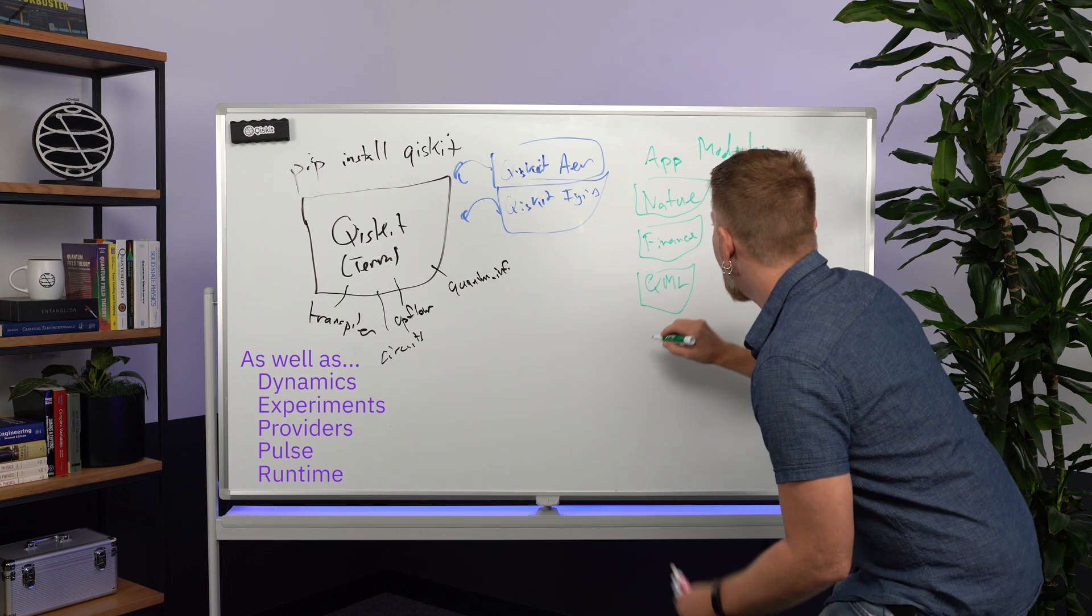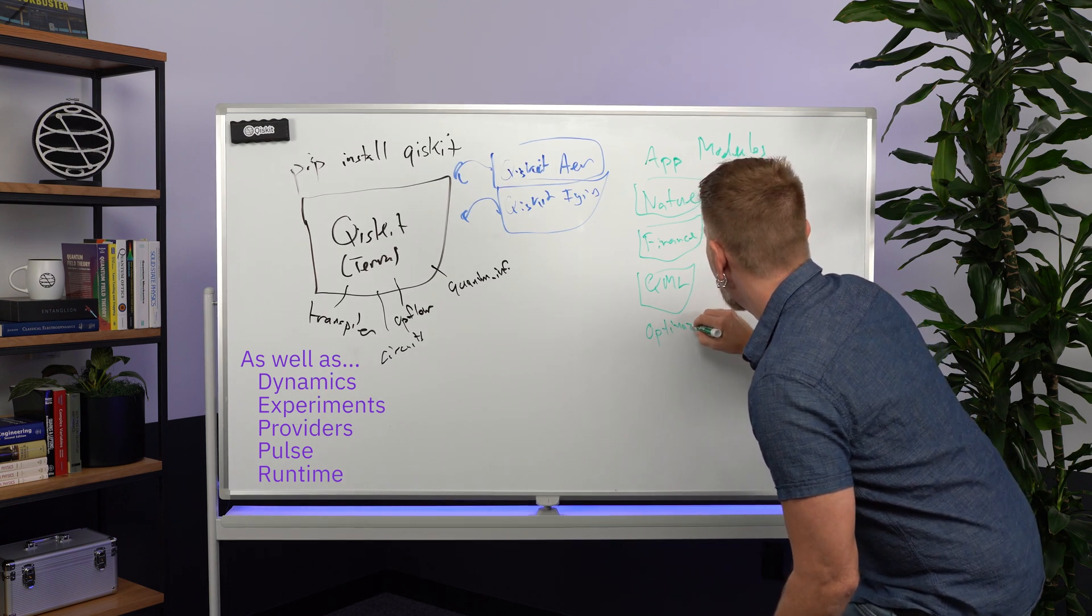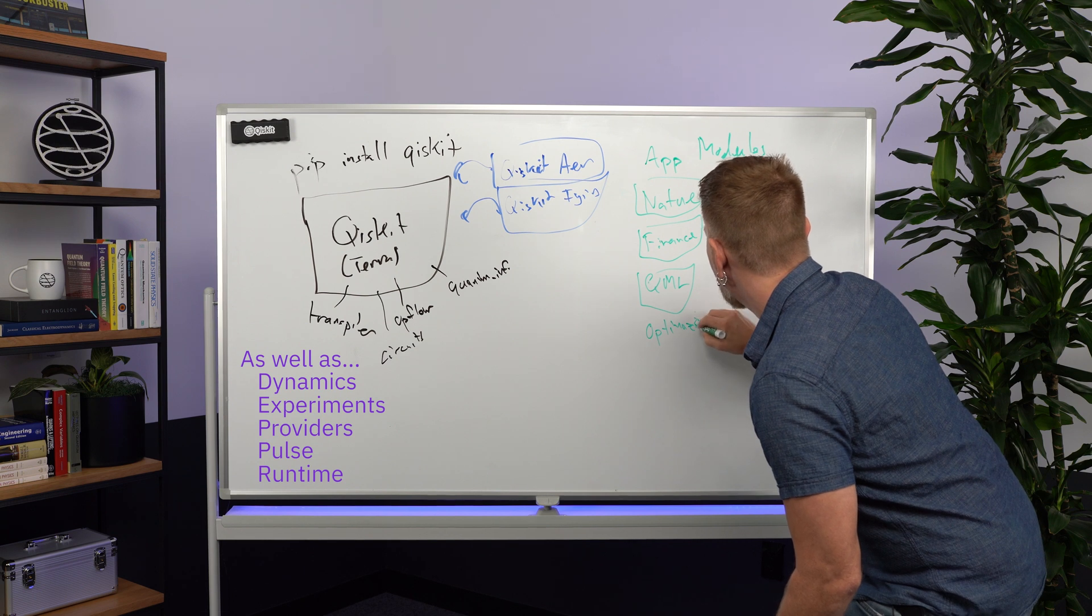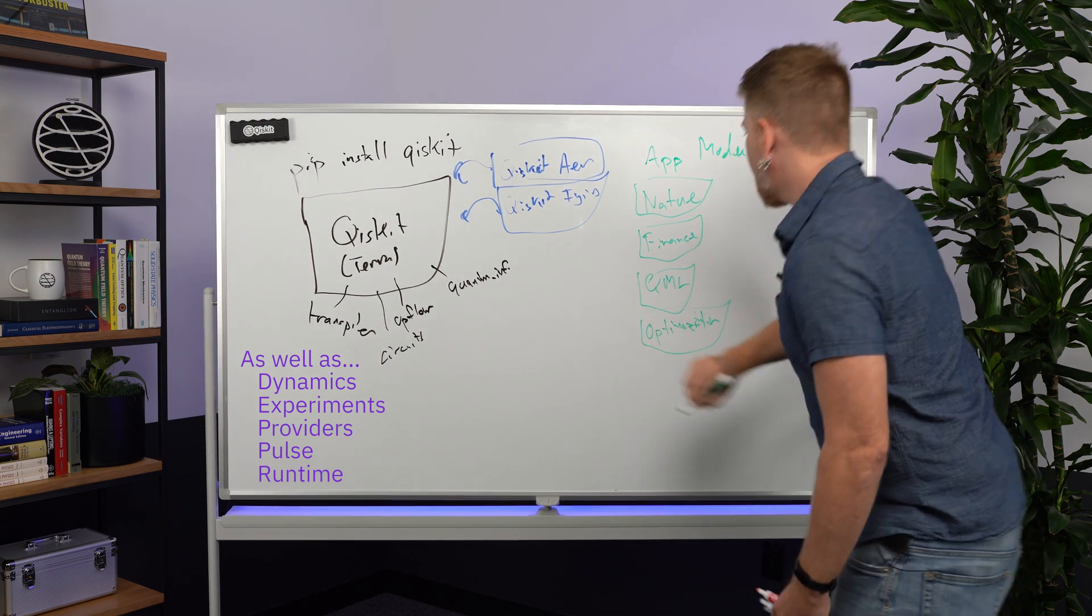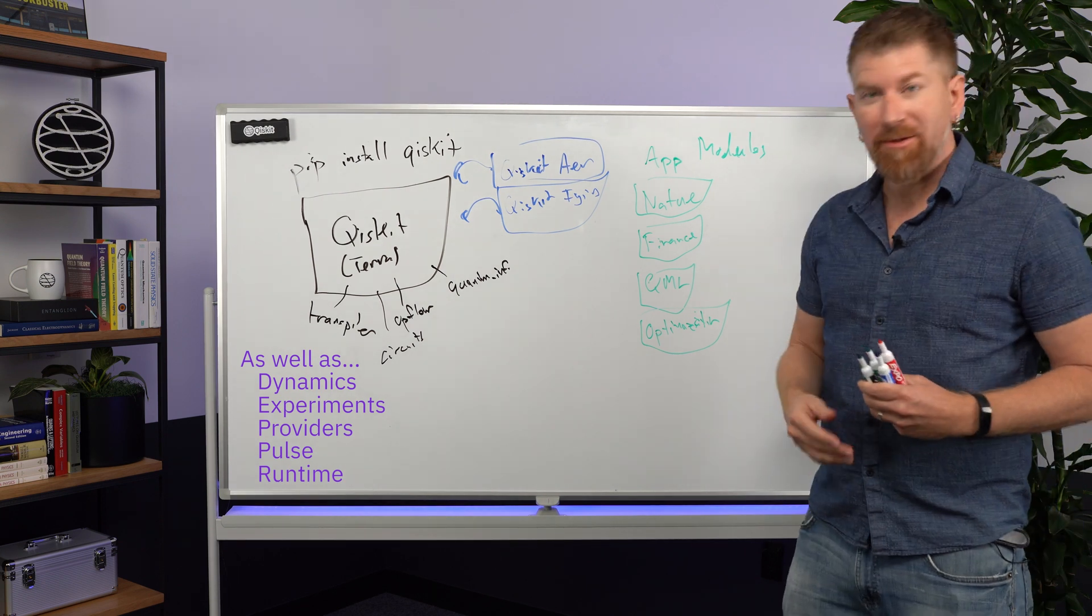And finally, you have Qiskit Optimization for figuring out things about networks and optimizing things, for example.